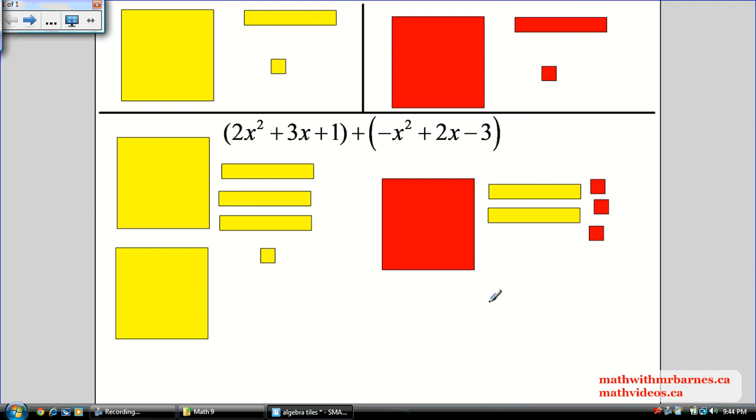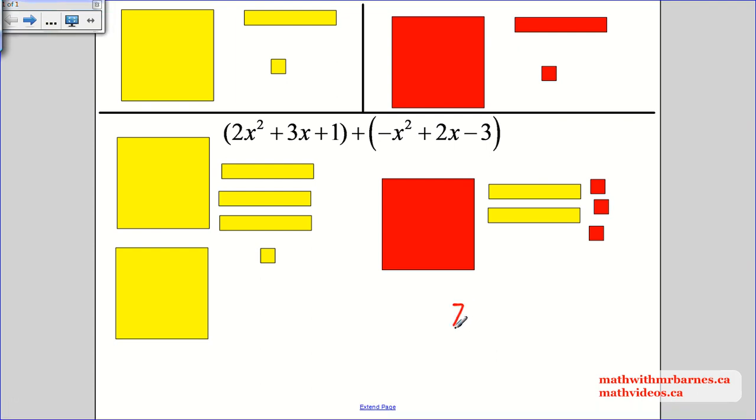Alright, so the next thing we need to know are called zero pairs. Well, zero pairs are like opposites. They're like terms, but they're opposite like terms. So like an x squared and a negative x squared are zero pairs. They're different colors. They're opposite. One is positive, one is negative, but they're exactly the same. They make a pair. What happens to those is they cancel out.